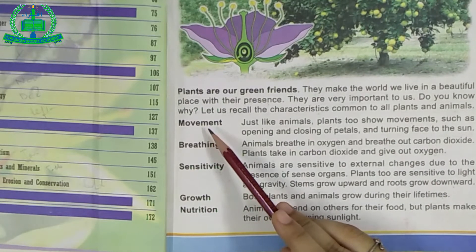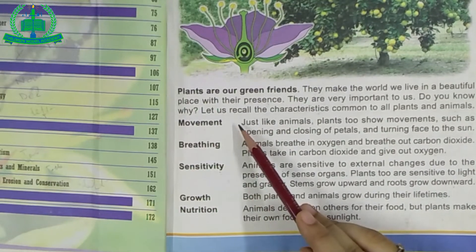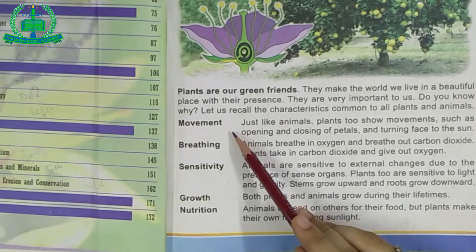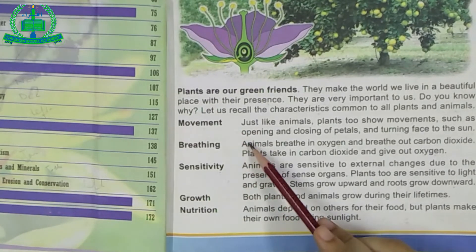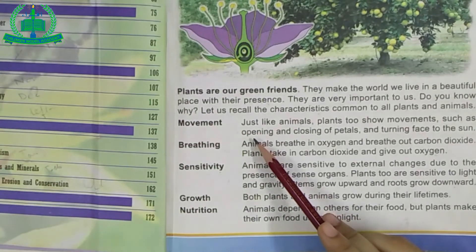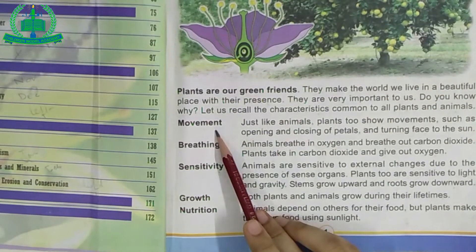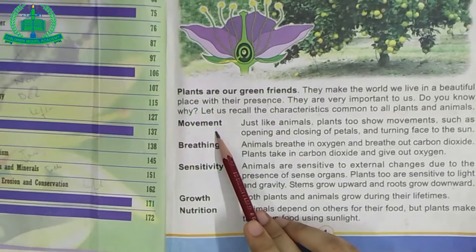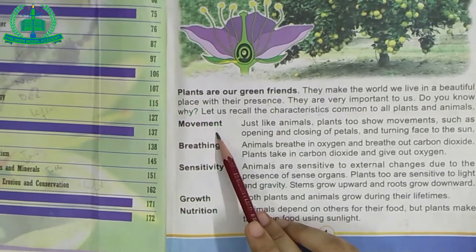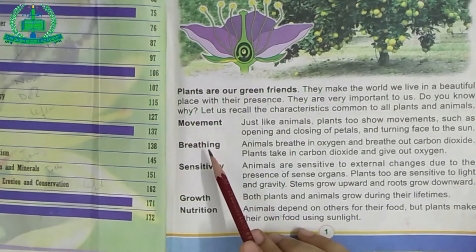Next: Movement. What is movement? All living things show movement. Plants show their movement by opening and closing of petals and turning their face to the sun, like the sunflower.